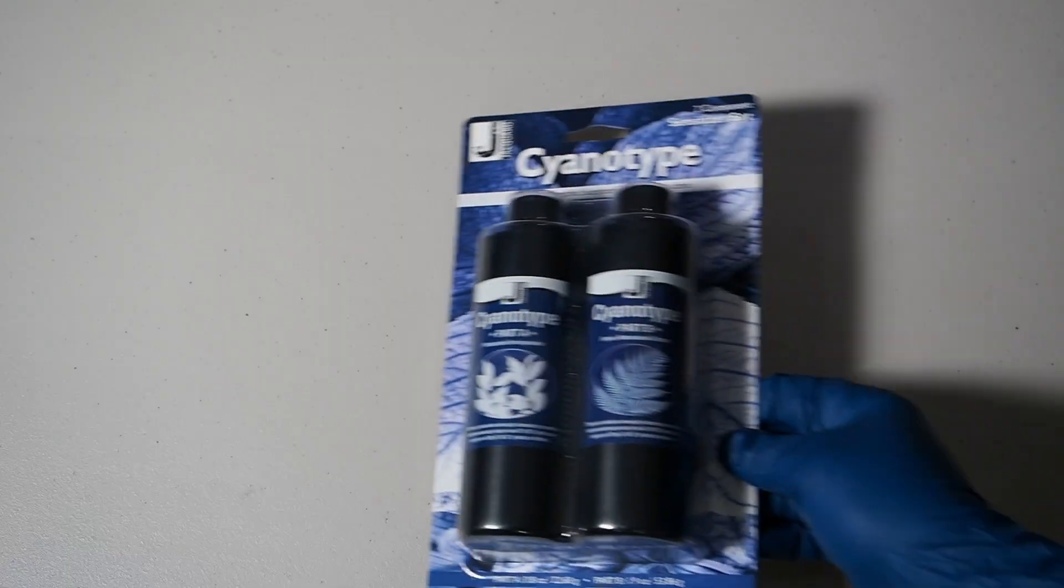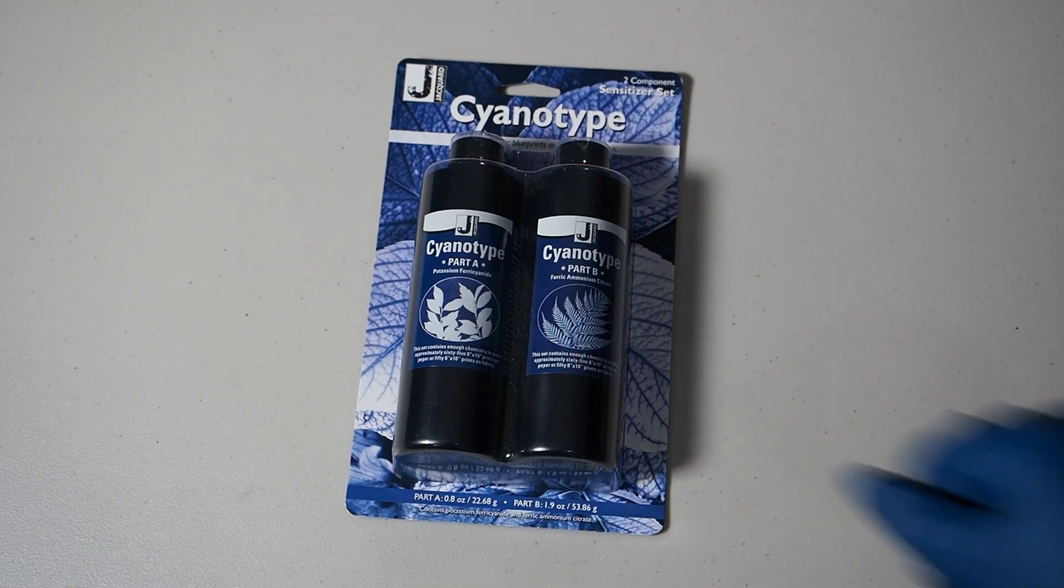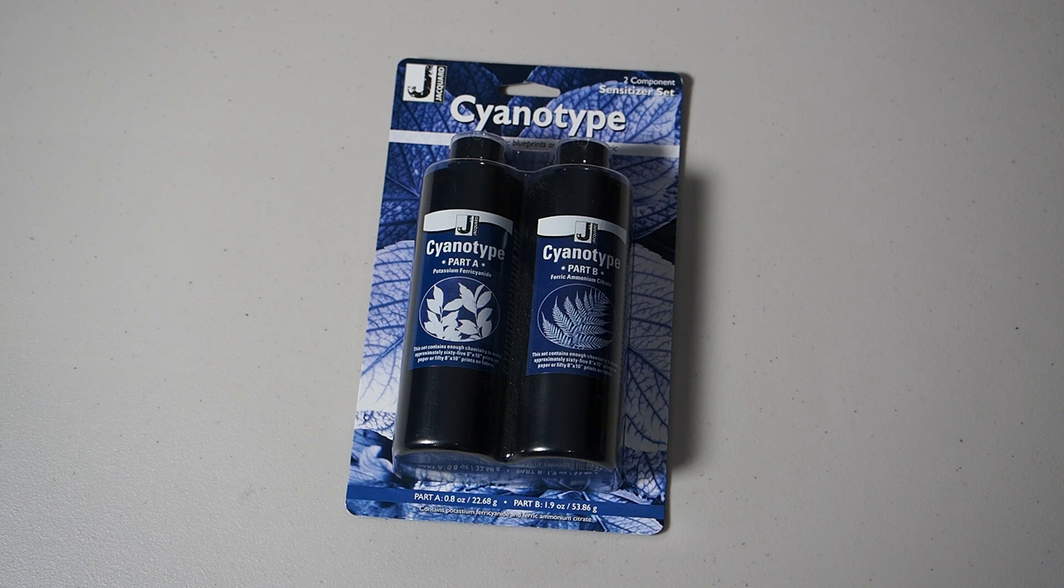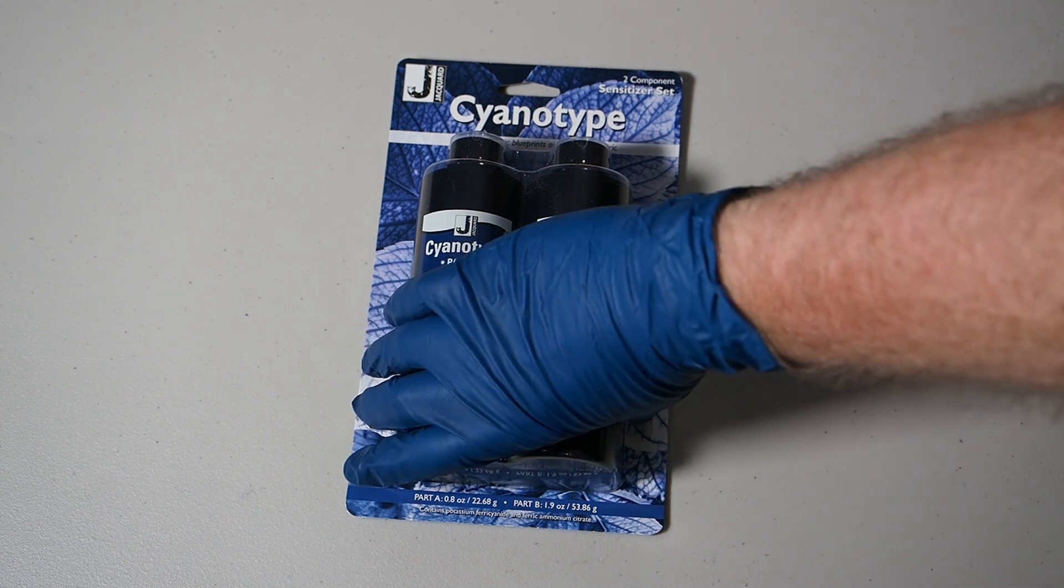To make cyanotypes you are going to need some materials. First you'll need some cyanotype chemistry. It's a two-part mixture of potassium ferrocyanide and ferric ammonium citrate. I got this kit at a local art store and it's available online as well. The kit has the chemicals pre-measured for you which makes getting started a lot easier.